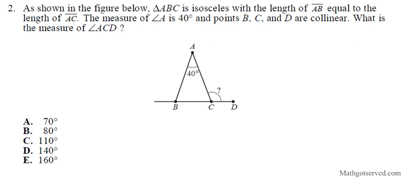Let's take a look at question two. Triangle ABC is isosceles with length AB equal to the length AC — meaning these two sides are congruent. The measure of angle A is 40 degrees, and points B, C, and D are collinear, meaning they fall on a straight line. What is the measure of angle ACD? For isosceles triangles, if the two sides are congruent, then the base angles must also be congruent. If I can find the measure of the base angle at C, I can subtract it from 180 to find angle ACD.